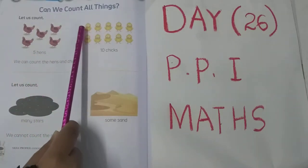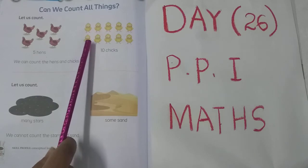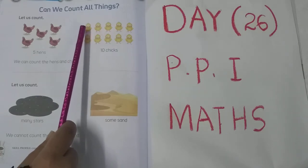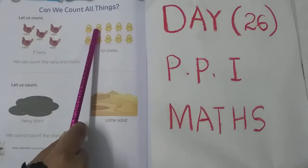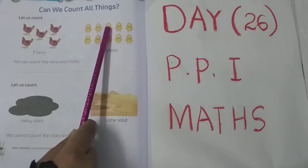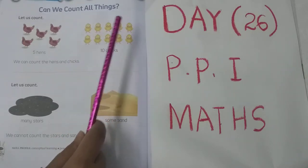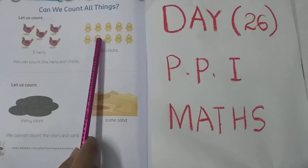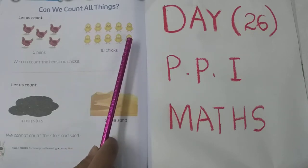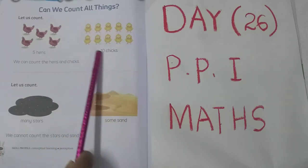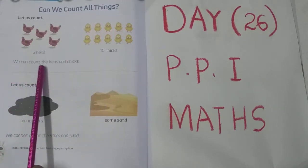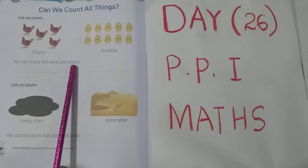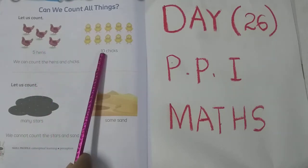See the next picture. There are chicks. Let's count how many chicks are here. 1, 2, 3, 4, 5, 6, 7, 8, 9, 10. 10 chicks. We can count the hands and chicks.